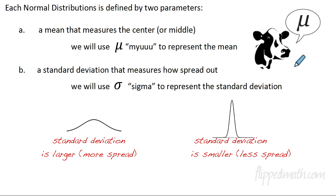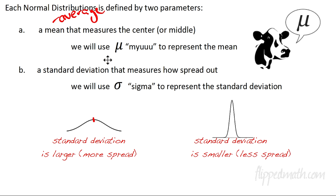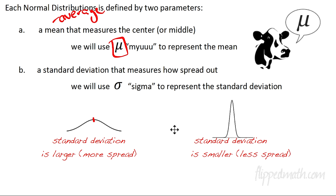Here's an animal — it's a cow. When we describe normal distributions, there are two things we need to know. First, we need to know where the center is — that's the mean, which is the average. The mean measures the middle of the distribution, and we're going to use a Greek letter called mu. Cow says moo, but this is mu. So mu represents the mean: when you see mu equals 3, the mean equals 3.